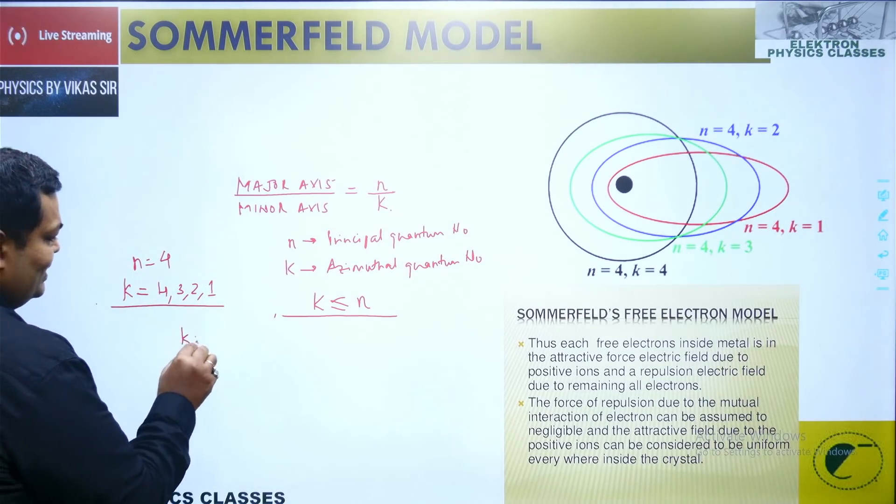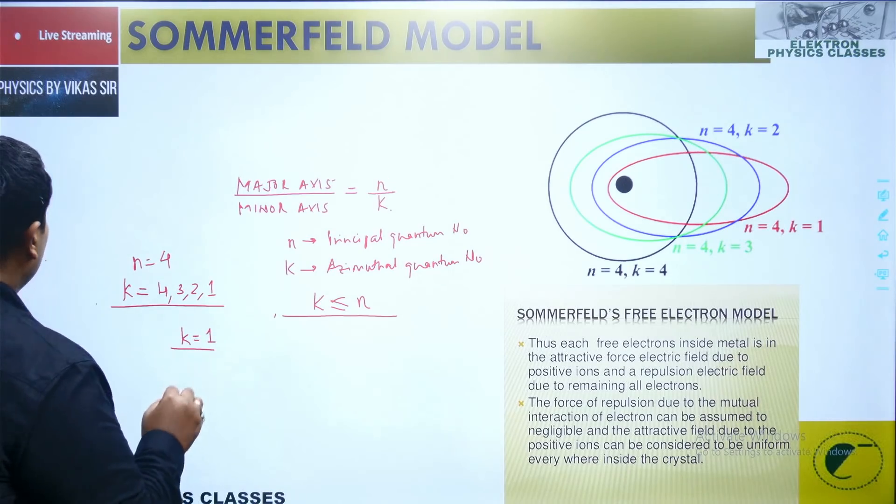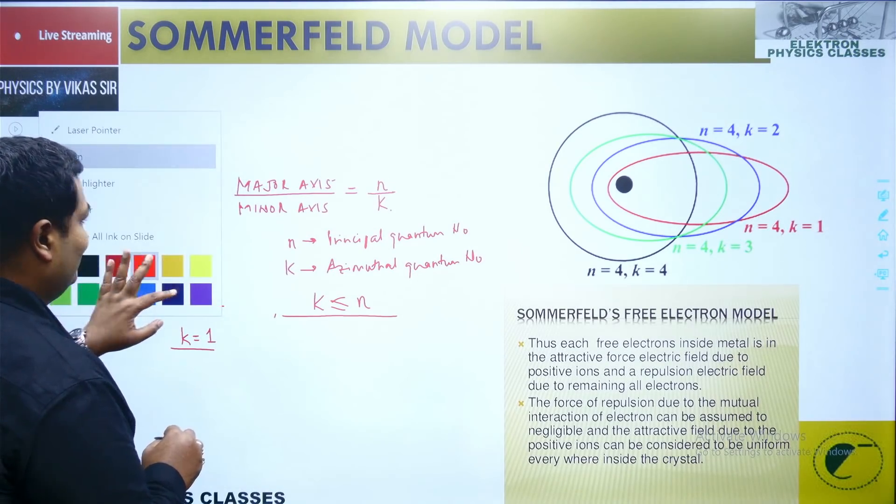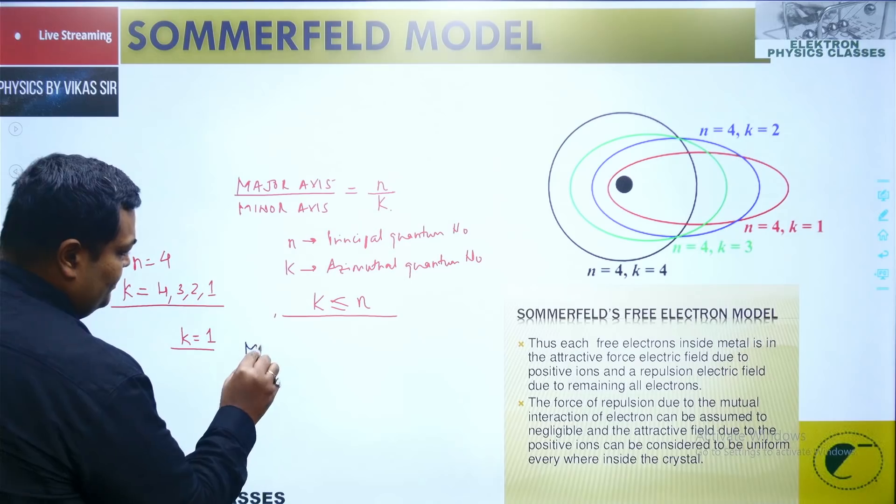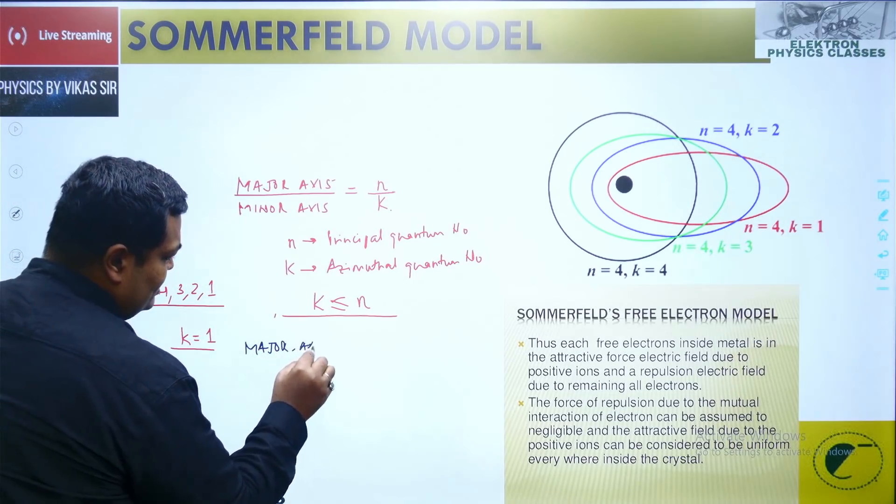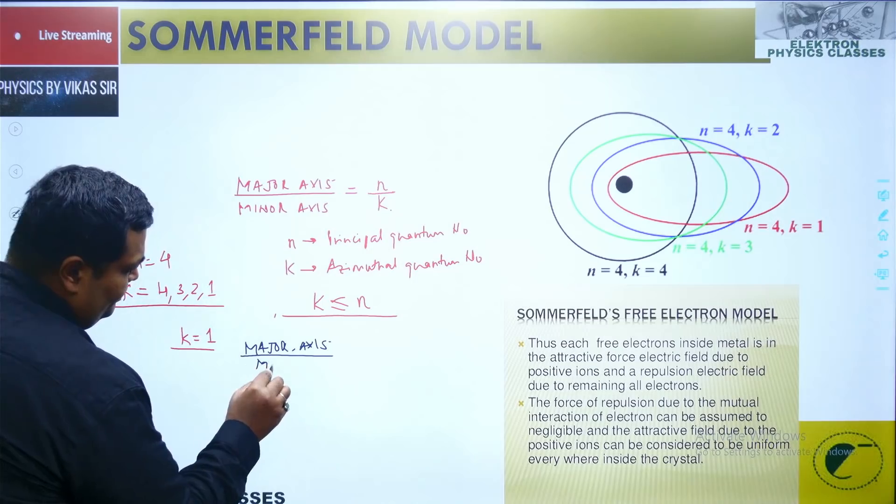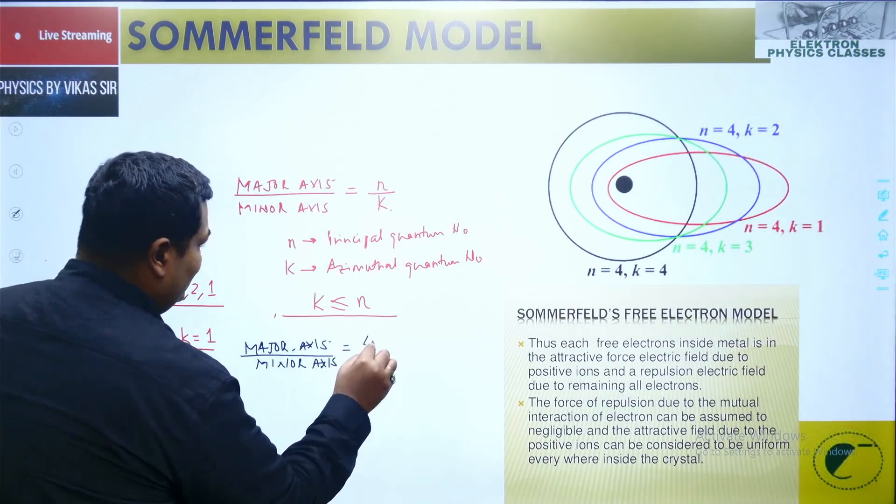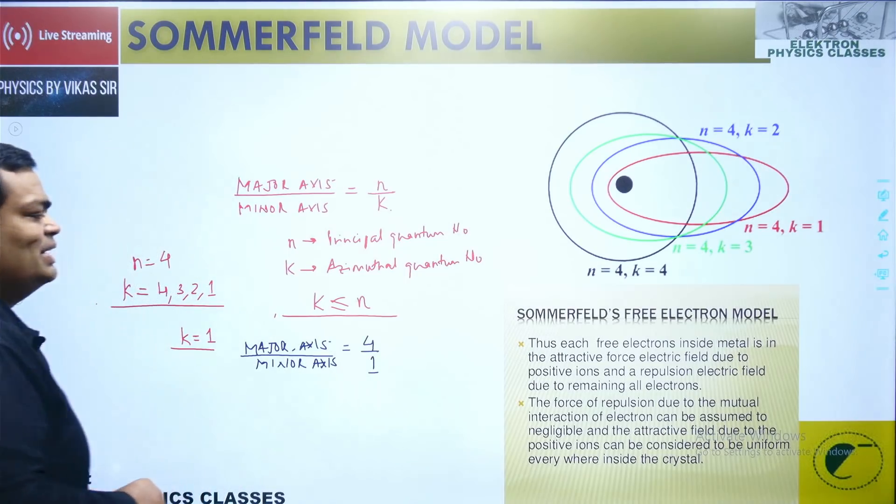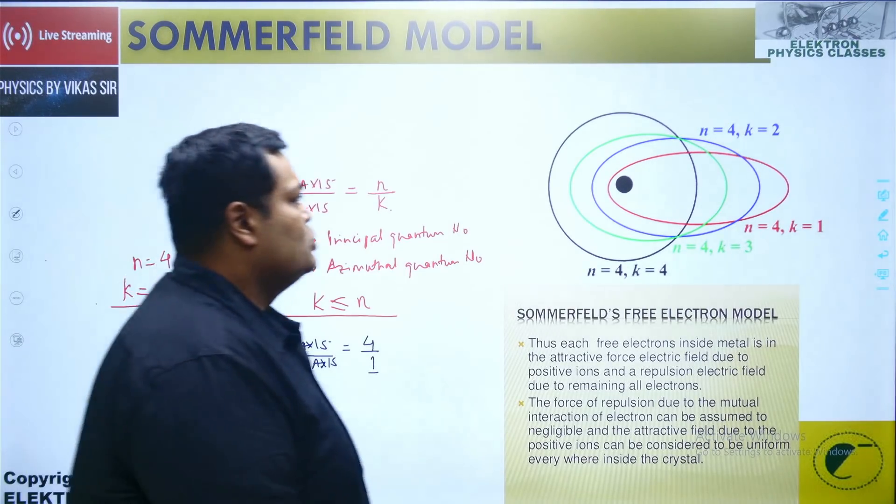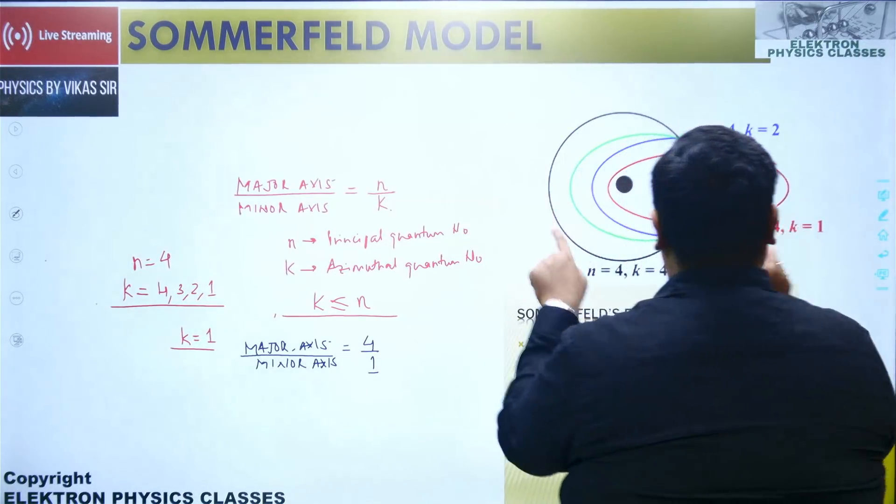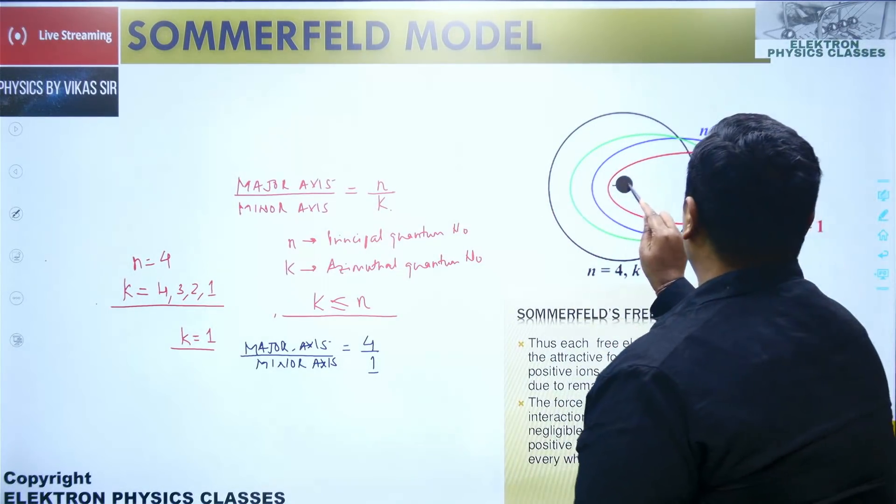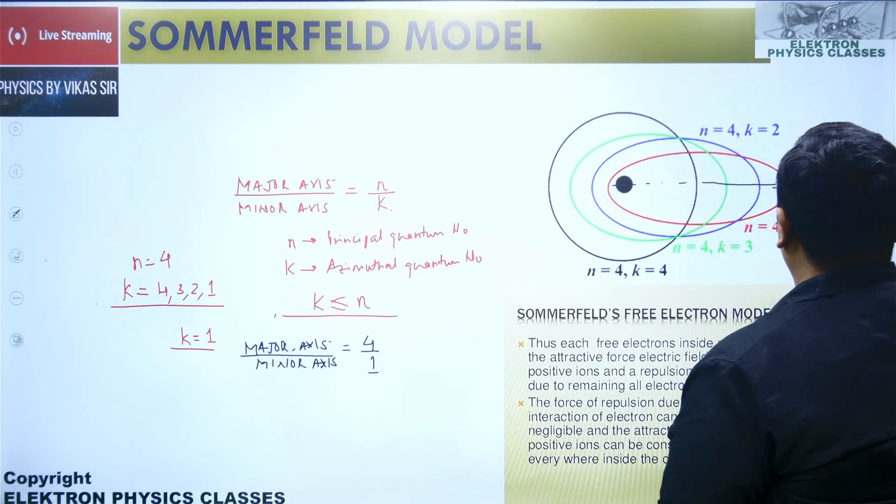Let's start with k equal to 1. So if I pick up the value for k as equal to 1, what do I reveal from here? That the major axis upon the minor axis, n value is 4, k value becomes 1, so that's 4. So major axis is 4 times the minor axis, so it will be a very flattened ellipse like this. For this we have n equal to 4 and k equal to 1, so it is kind of a flattened ellipse.